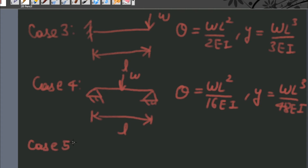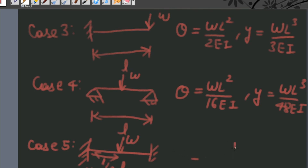Case number five: when a fixed beam of length L is subjected to a concentrated point load at its midpoint, then the deflection is given by WL cubed upon 192EI.